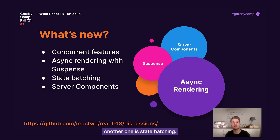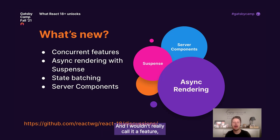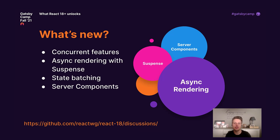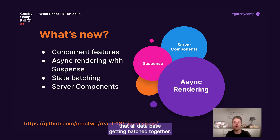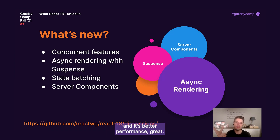Another one is state batching. I wouldn't really call it a feature — it's more like a large improvement. With React 18, it guarantees that all state updates get batched together, which leads to less re-renders, less CPU cycles, and thus better performance.